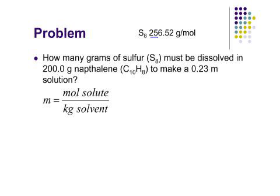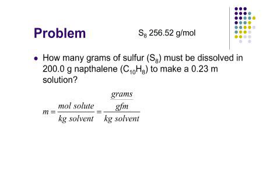S₈ has a molar mass of 256.52 grams per mole. We know that molality equals moles over kilograms, and that moles equals grams divided by the molar mass, so we can substitute that in — giving us grams over molar mass, divided by kilograms of solvent. We have 200 grams of naphthalene, and dividing by 1000 gives 0.2000 kilograms of naphthalene.